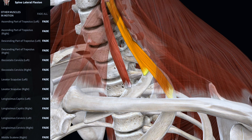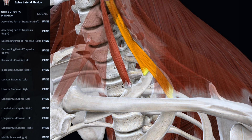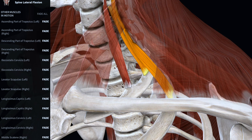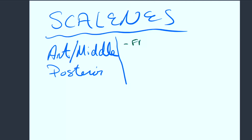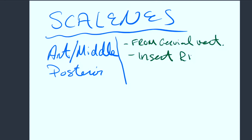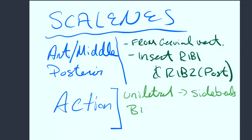A lot of times you might have a tender point in one of the scalenes with a first or second inhalation rib dysfunction. To review: the scalene muscles originate from the cervical vertebrae and insert onto rib 1 and rib 2 — rib 2 for the posterior scalene. Their action is: unilateral contraction causes side bending, and bilateral contraction causes flexion.